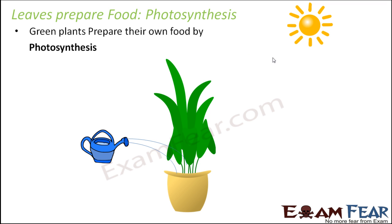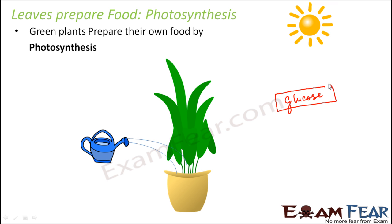What happens during the process of photosynthesis? During photosynthesis, food is prepared in the form of glucose. So glucose is the main product of photosynthesis. Let's see what exactly happens in this process.